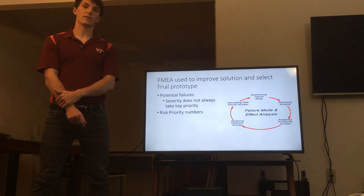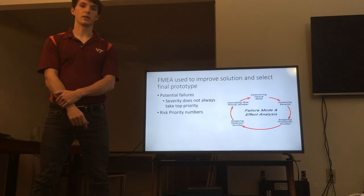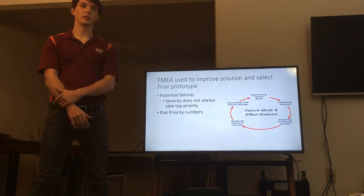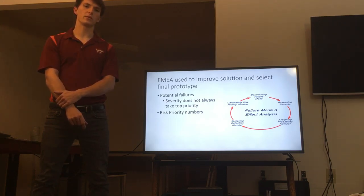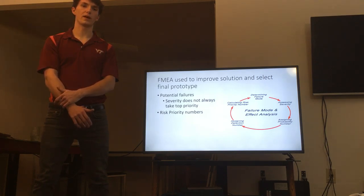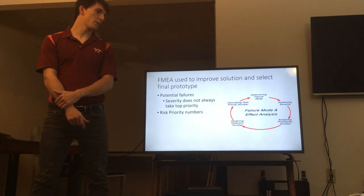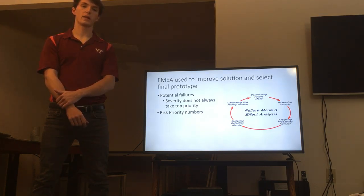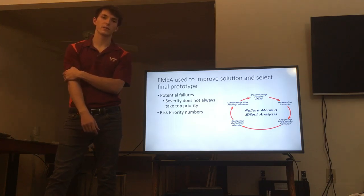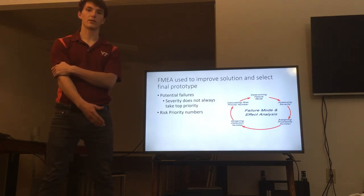We then noticed that the failure modes and effects analysis takes into account more than just the severity of each failure — it also considers the occurrence and the method of detection. While the potential occurrence for each failure was roughly similar, detection methods for slip between the servo and chuck were manageable, while a lack of light was very hard to detect technically and provide the customer solid feedback. Risk priority numbers were associated with each failure mode, and the light sensor had the highest, with chuck slip being the second highest.